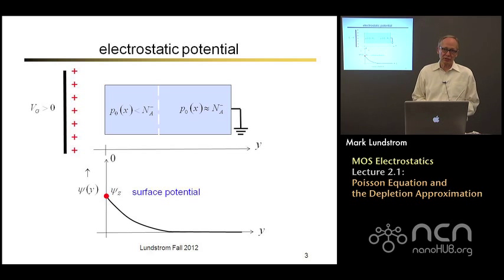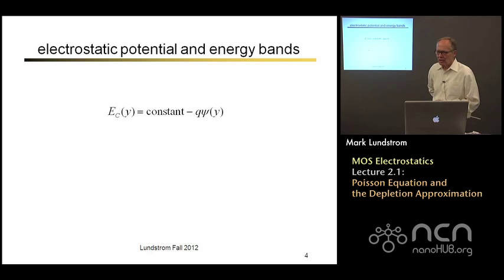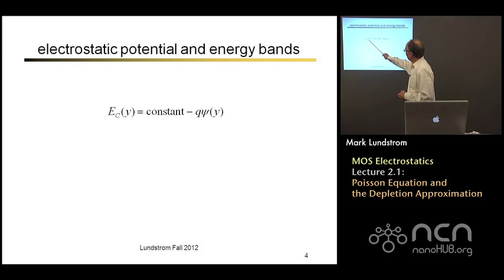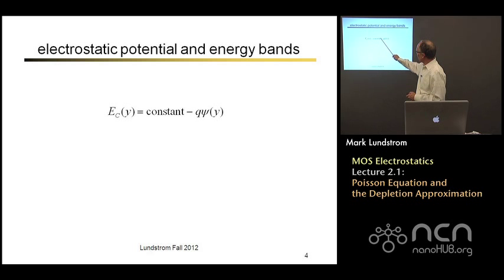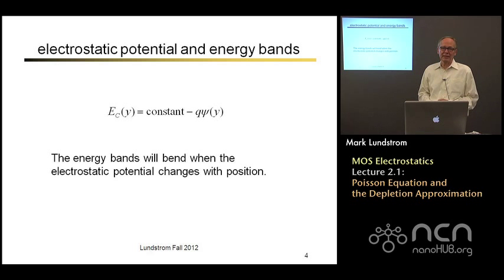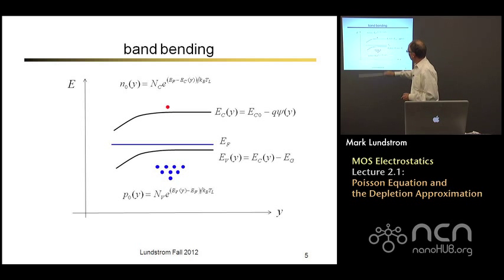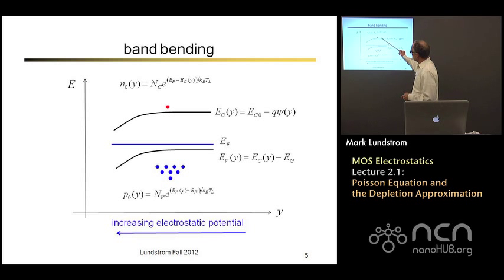If we understand the surface potential, it will tell us an awful lot about what's going on inside the device. The electrostatic potential affects the energy band diagrams. Remember from freshman physics that a positive potential lowers the energy of an electron. So the conduction band position is basically going to be lowered by Q times the electrostatic potential at that particular location in space. So the energy bands will bend down when the electrostatic potential goes up and becomes positive.